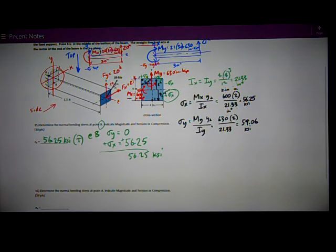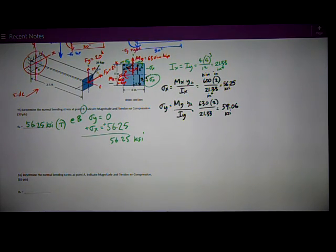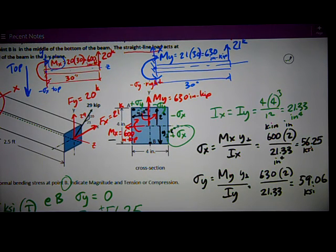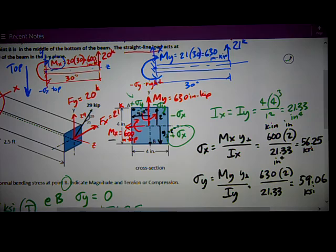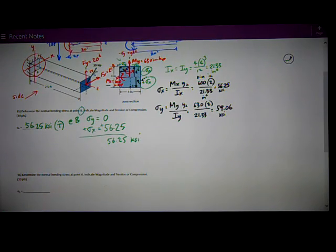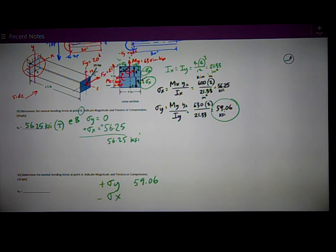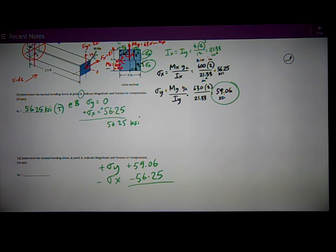If I want to figure the stress at point A, same thing. I look at my diagram and I see that at point A, I've got positive sigma Y and I've got negative sigma X. Positive sigma Y is 59.06 from this analysis. Sigma X is negative, it's negative 56.25. I can add those two things up and I get 2.81 positive. My units are all KSI. That's tension. So I'll report that answer, 2.81 KSI tension.